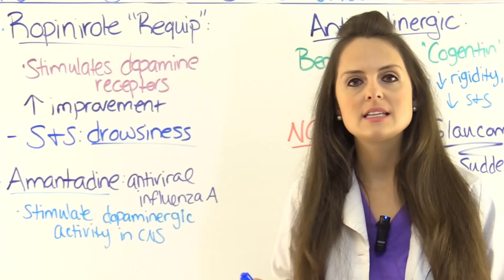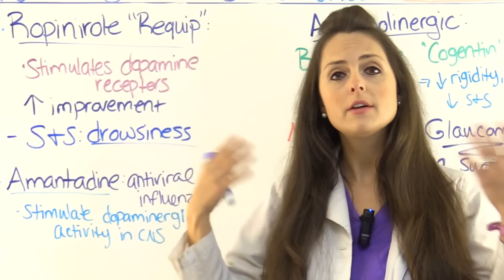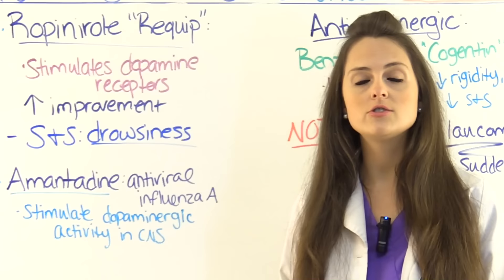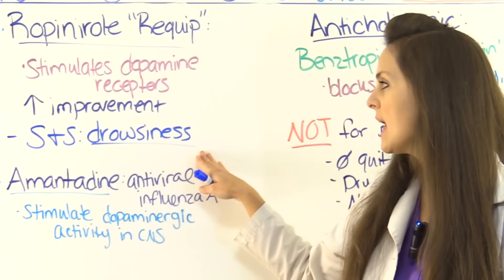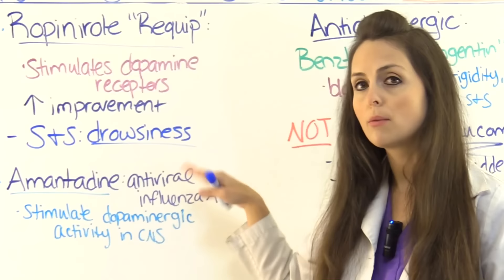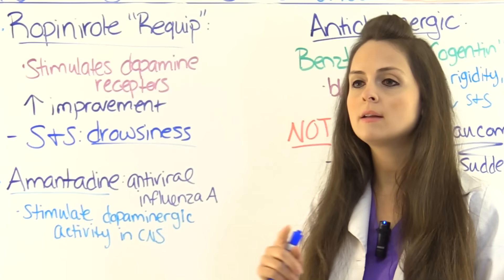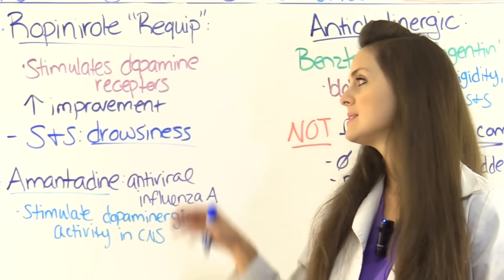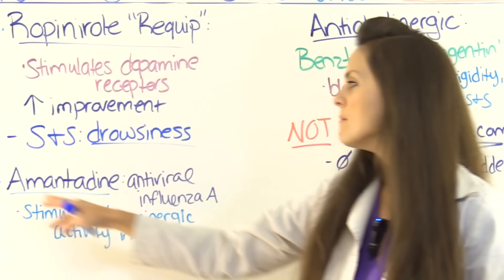Another type of drug used to treat Parkinson's disease is ropinirole, also known as Requip. It is a dopamine agonist, so it stimulates those dopamine receptors which will help improve signs and symptoms. It's also used to treat conditions like restless leg syndrome. A very important education point: this medication can cause severe drowsiness where the patient will abruptly fall asleep, so they should not take this medication before operating machinery, driving, or cooking.